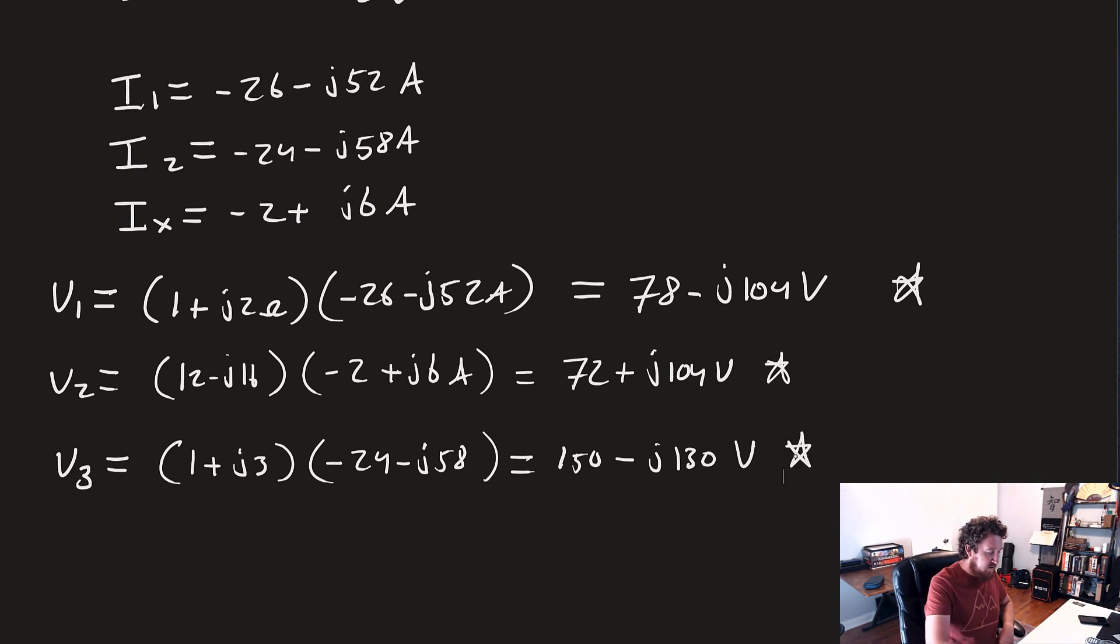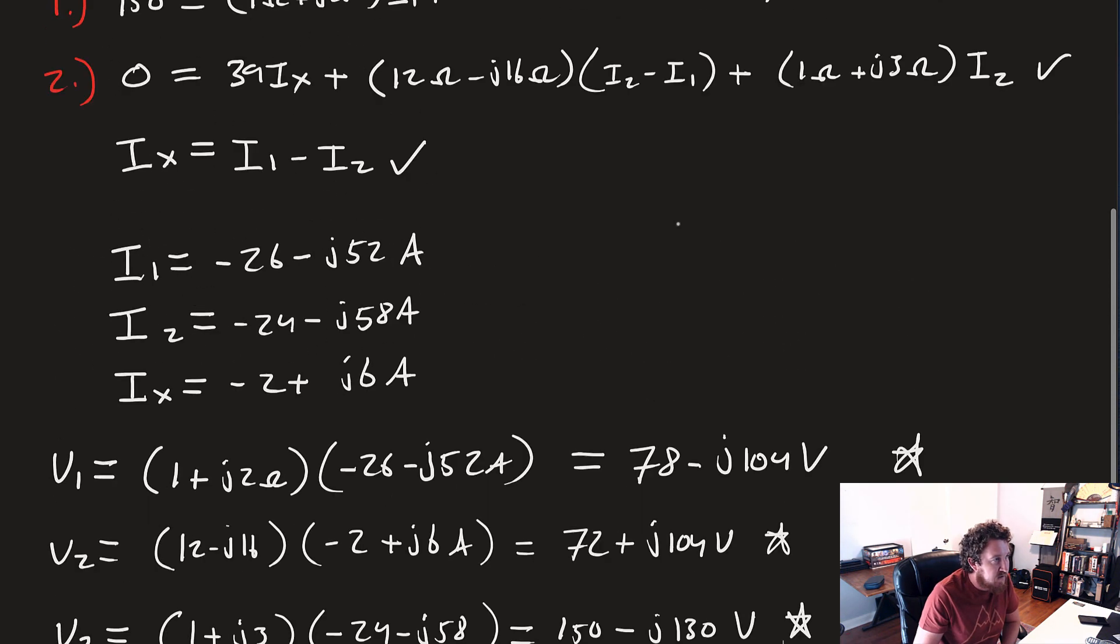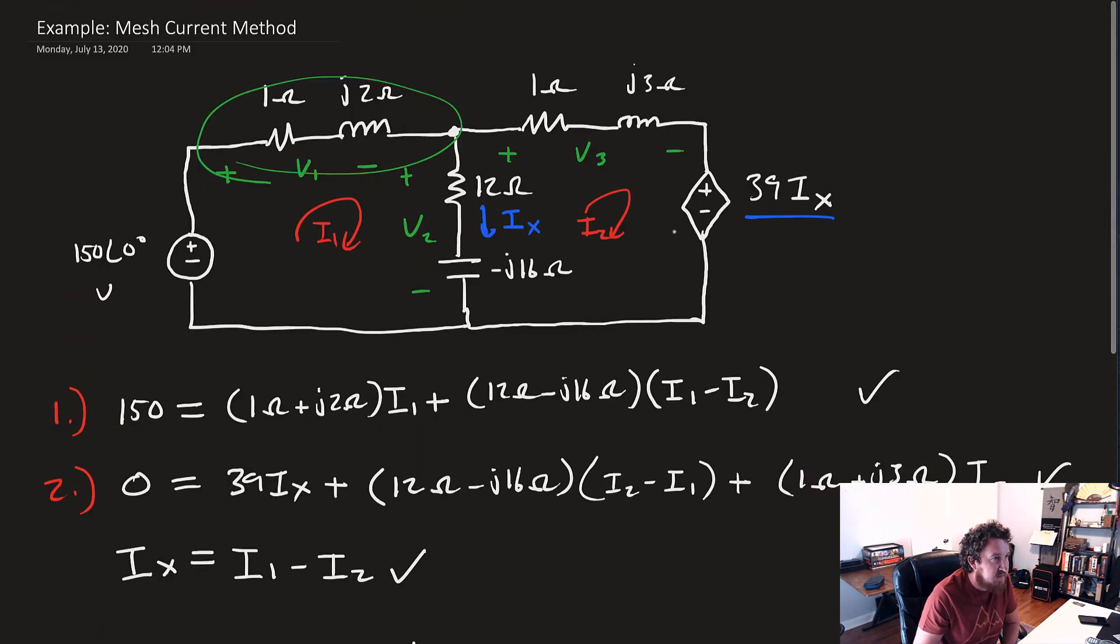And there we have it. There is the mesh current method in phasers, or using phasers, and as you can see, it is no different than what you learned in your circuits one class. In fact, it's arguably a little bit easier, or I think it's a little bit easier. So, there we go. That's mesh current method. As always, if you have any questions, comments, or concerns, please let me know, and I'll see you guys in the next video, where we'll actually move on to something new, something you haven't seen in your circuits one class. We're going to talk about transformers. So, I'll see you then. Thank you.